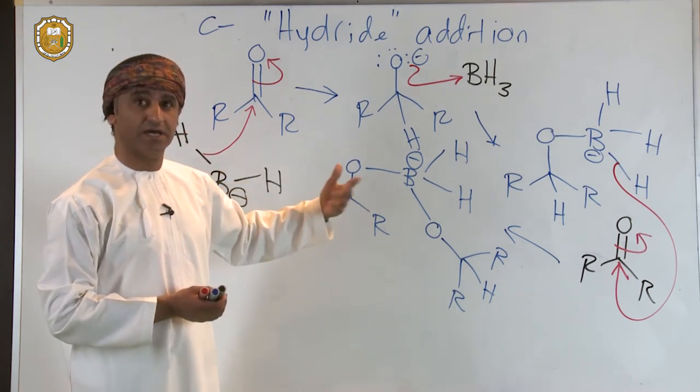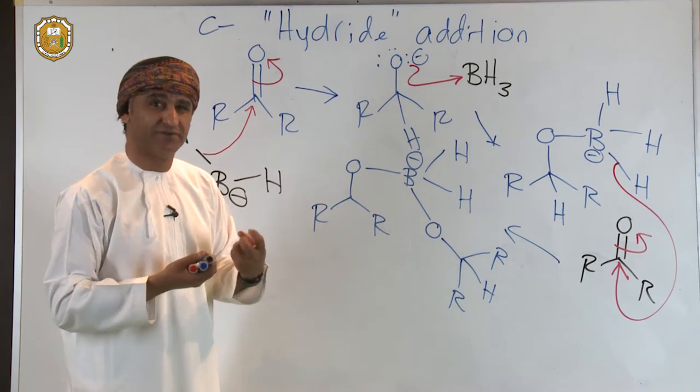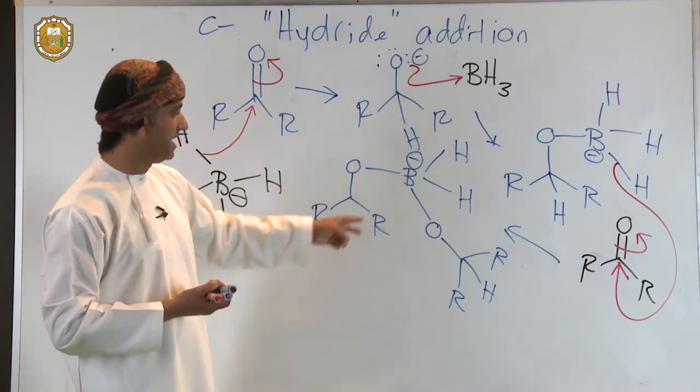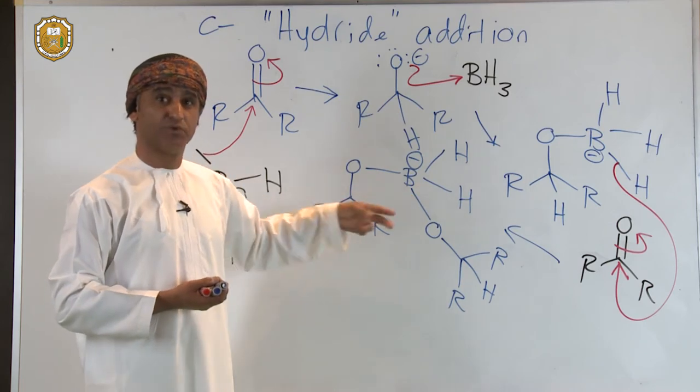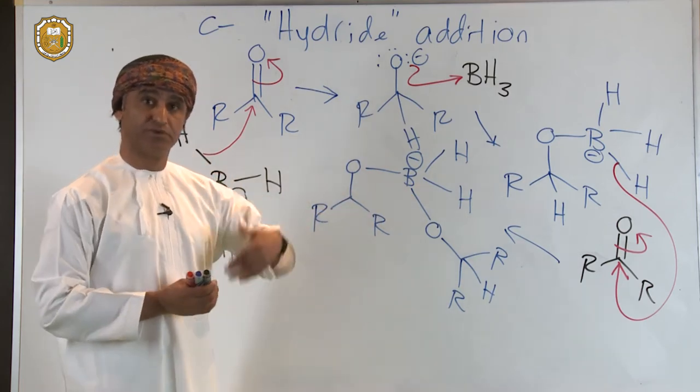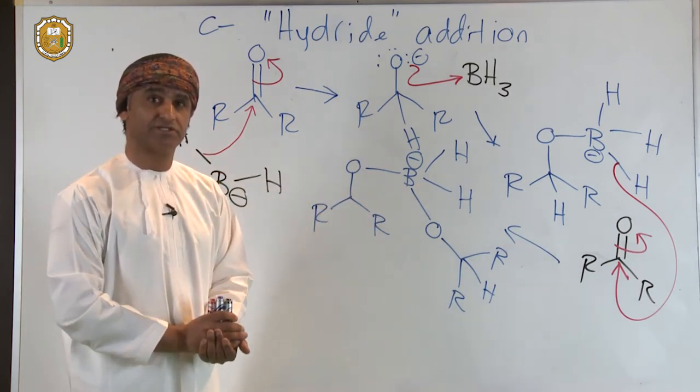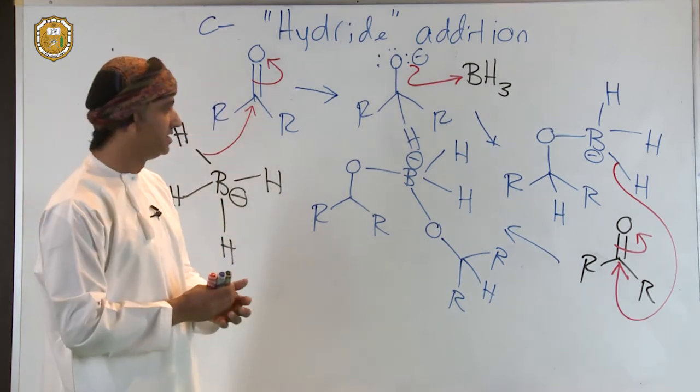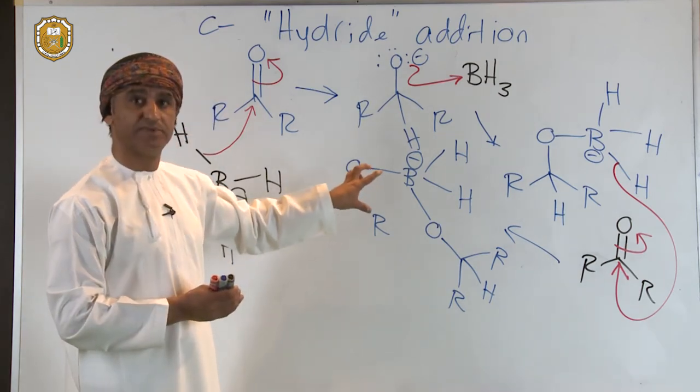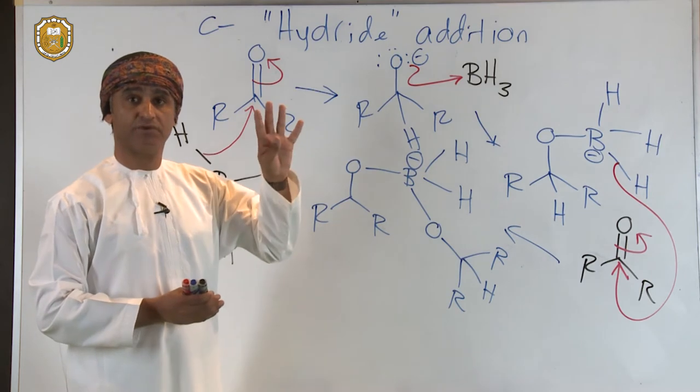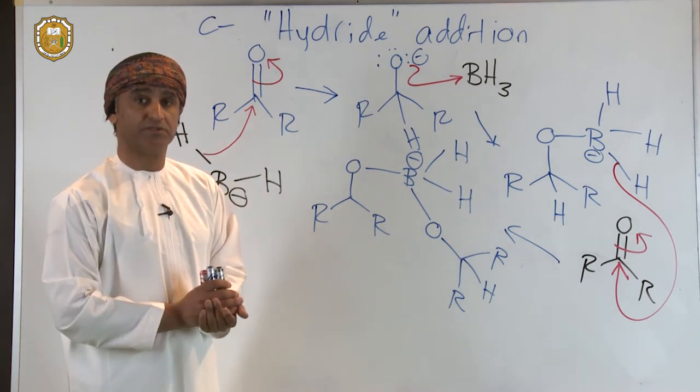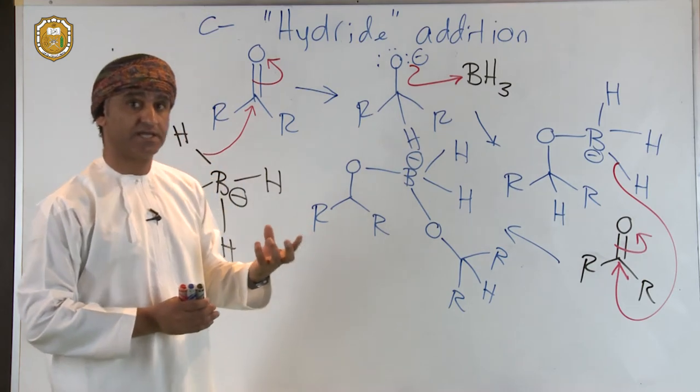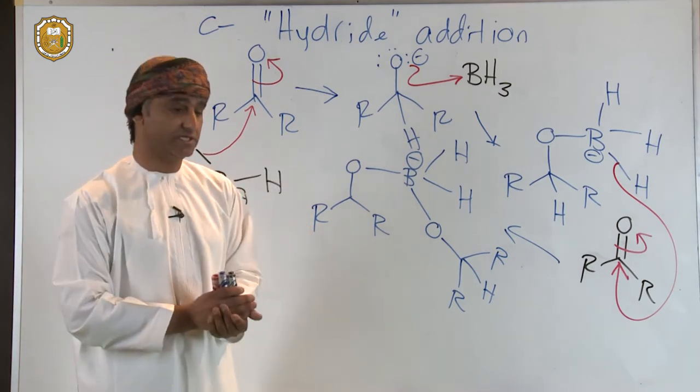Now, this intermediate can further react with two moles of the ketones in two consecutive nucleophilic addition reactions on the same ketone, which indicates that each BH4- can react with four moles of the ketone. In other words, one mole of sodium borohydride can reduce four moles of the ketone.